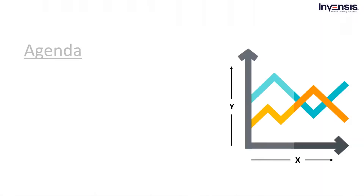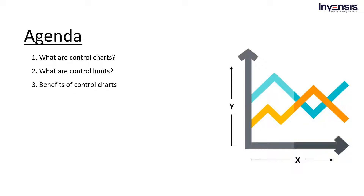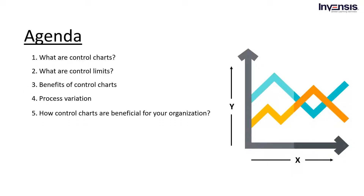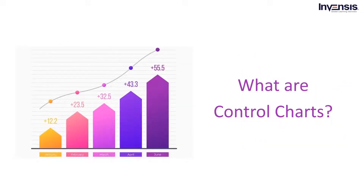Before we start, let's look at the agenda for the session. We will begin with a brief introduction to control charts, then discuss control limits, followed by the benefits of control charts. Then we will cover process variation, how control charts are beneficial for your organization, types of control charts, and how to create a control chart — including calculation of standard deviation, upper control limit, and lower control limit.